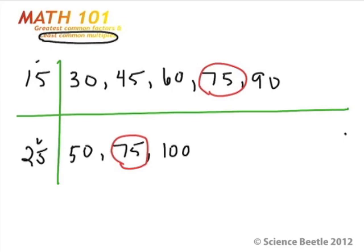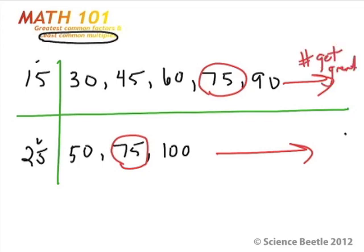We can keep going on the top and bottom lines, but what you'll find is that as you go further to the right, the numbers get greater. And if it's greater, it's really not going to be the lowest number common to both. The lowest number common to both in this case is 75. So for this problem, the least common multiple is going to be 75.